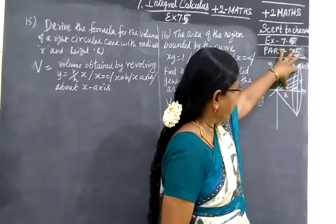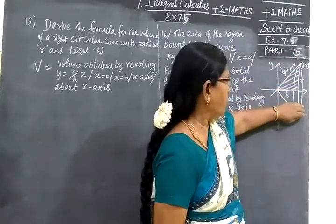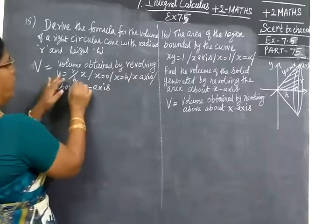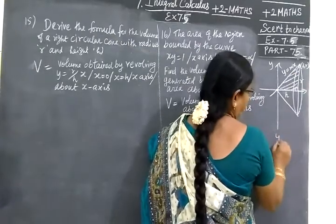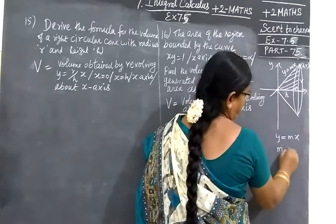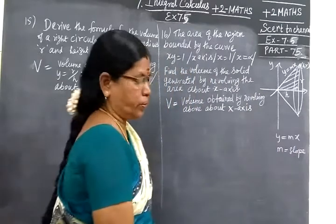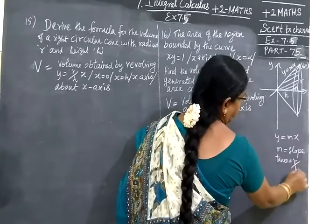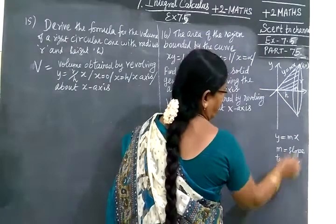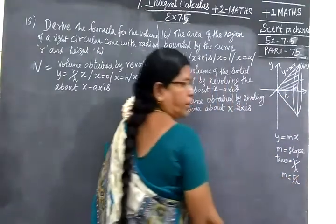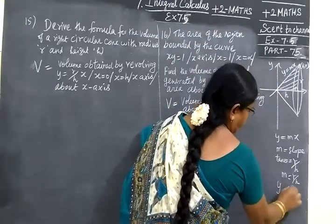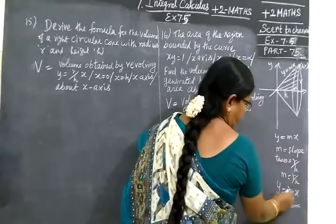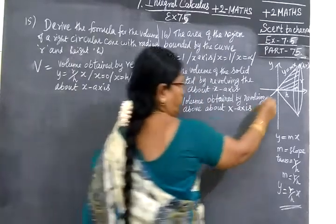This is the area of the triangle revolved about the y-axis to find the volume. This is the volume obtained by revolving y equals R/H times x. Now y equals mx, where m denotes the slope. M represents the slope. Using the slope formula tan theta equals opposite side by adjacent side. Opposite R equals adjacent H, so m equals R/H. So y equals mx becomes y equals R/H times x.